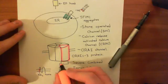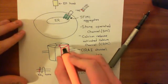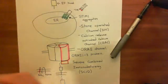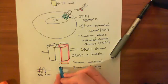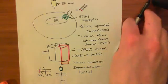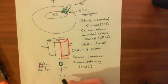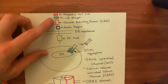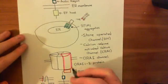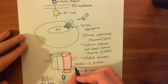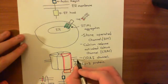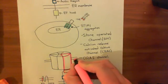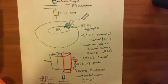On the diagram: the channel-activating domain is shown interacting with the Orai-1 protein. Below that is the acidic region, which was originally inhibiting the channel-activating domain in the inactive STIM1 protein. Below that is the EF-hand domain. The negatively charged region sits further down, and the polybasic tail at the top interacts with the negatively charged phospholipid heads of the inner leaflet of the phospholipid bilayer.